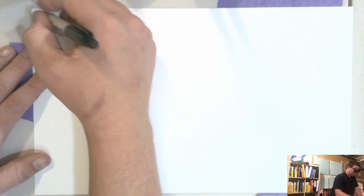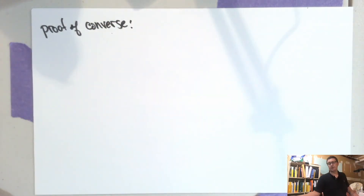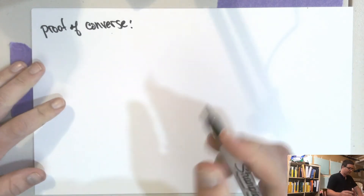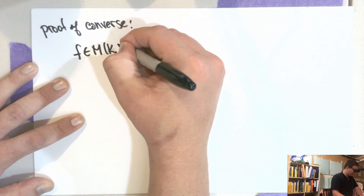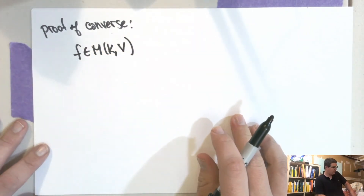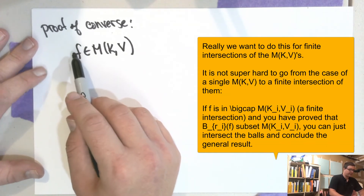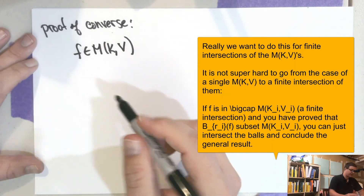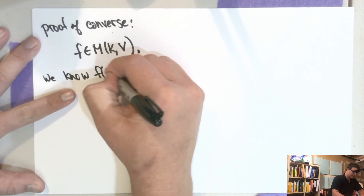So now let's prove the converse. We're going to show that in these compact-open sets, they have a metric open contained inside of them. So we're going to take F in M(K,V). And what we want to do is show that there's a metric ball around F that's completely contained in this set. We know that F(K) is a subset of V.